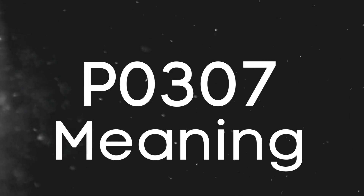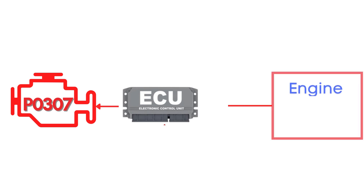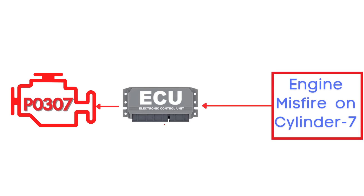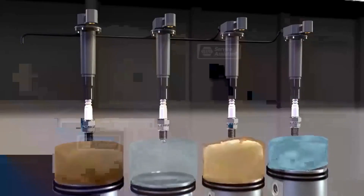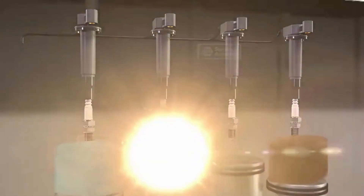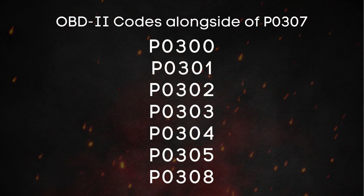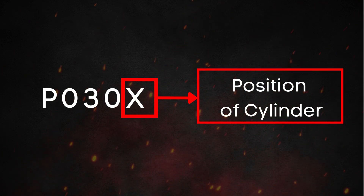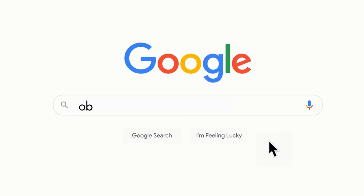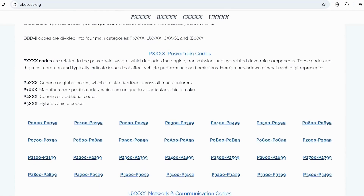First things first, let's break down what the P0307 code actually is. This code gets triggered when the Engine Control Module, or ECM, detects an engine misfire on Cylinder 7. A misfire means that the combustion process inside one or more cylinders isn't happening properly. You may also find another OBD-2 code like P0301 to P0308 alongside P0300 — the last number in these accompanying codes refers to the affected cylinder. Visit our website obdcode.org for a detailed explanation.